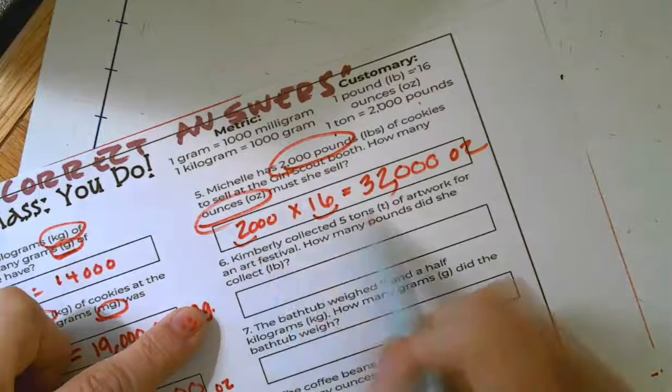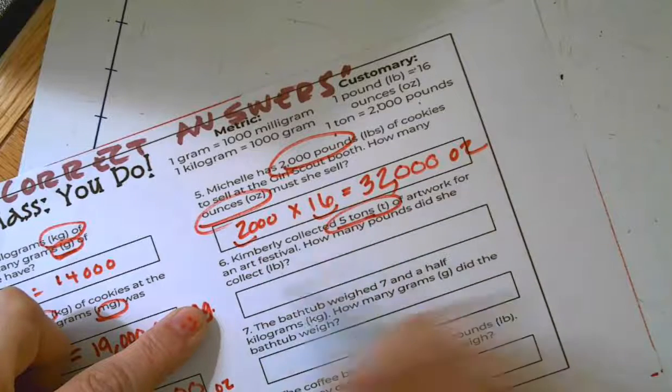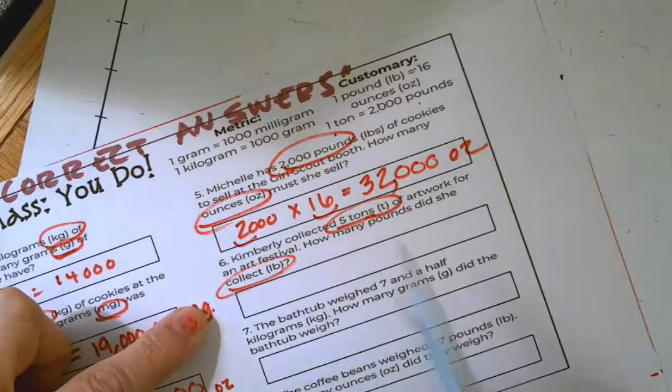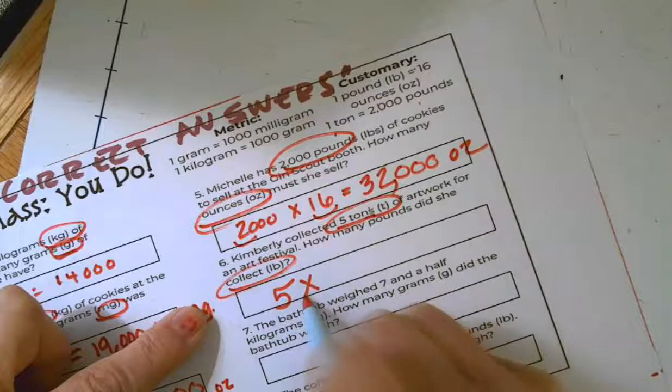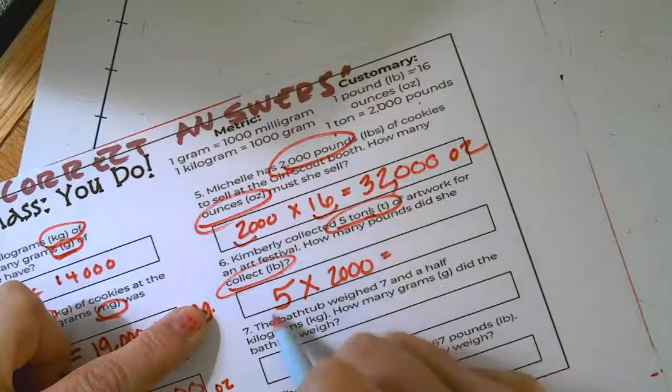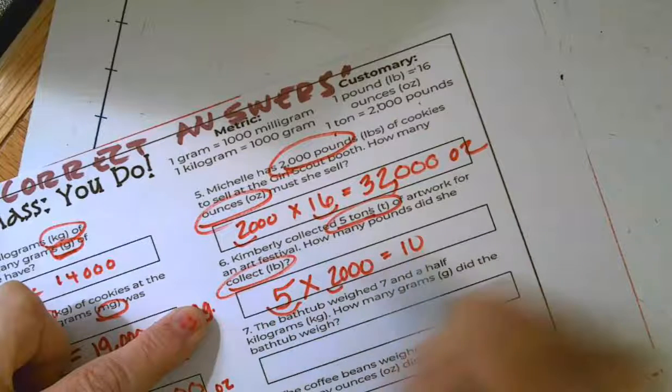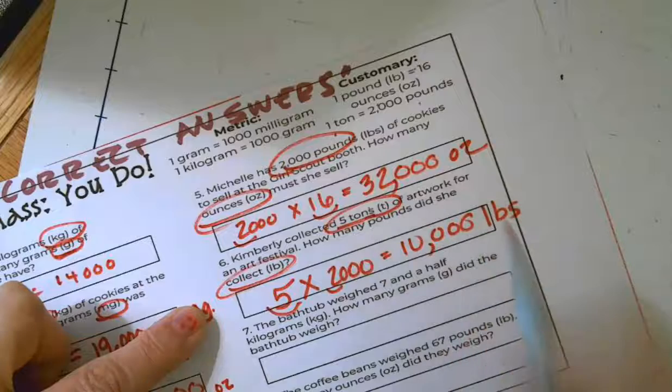Number six, Kimberly collected five tons of artwork for an art festival. How many pounds did she collect? Well, I'm going from tons to pounds. I have five of that. There are 2,000 pounds in a ton. I multiply by 2,000. I know 5 times 2 is 10. And I annex three zeros. 10,000 pounds.